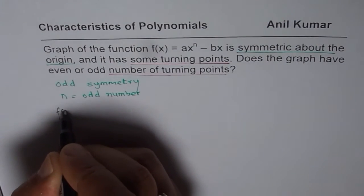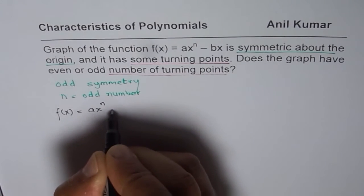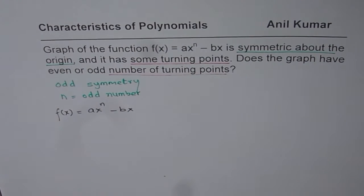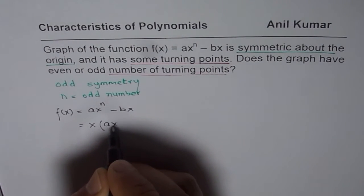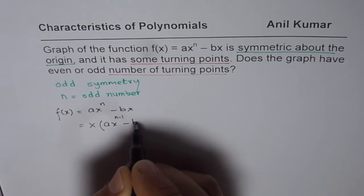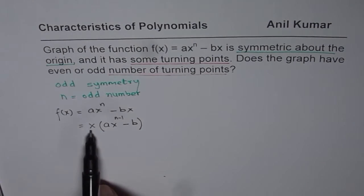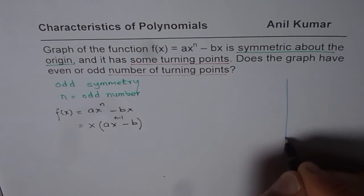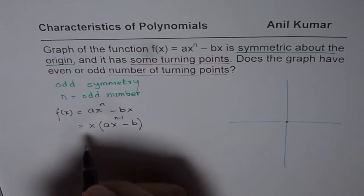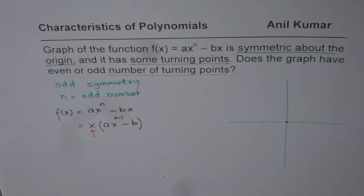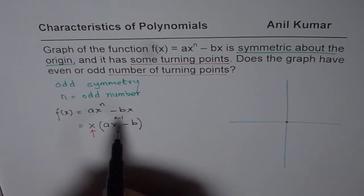Let me rewrite the function. F of x equals ax to the power of n minus bx. Now when that is the function, we could actually factor x out and see what remains. x is a common factor, so we get x times (ax to the power of n minus 1 minus b). This shows that there is a zero at the origin. And now we have one more factor. How many zeros will that factor lead to? That is still to be seen.